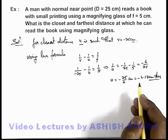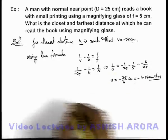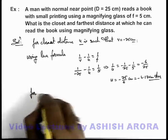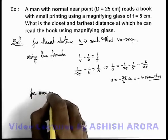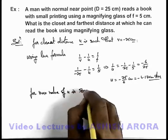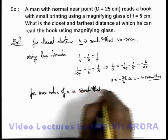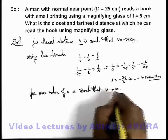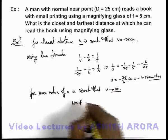For maximum value of u is such that v will tend to infinity. That means u must be equal to the focal length.